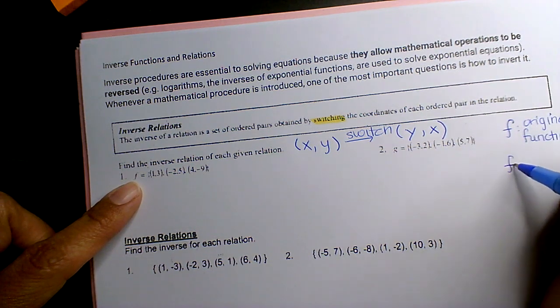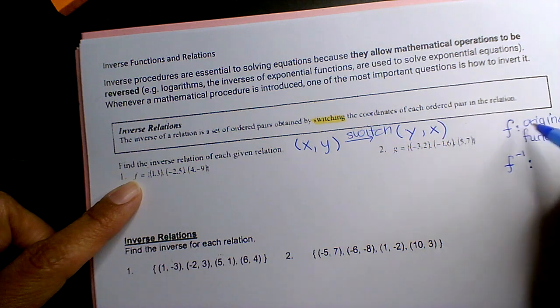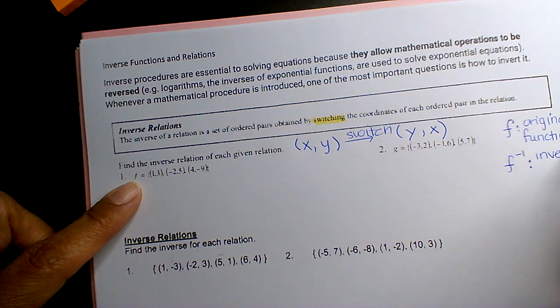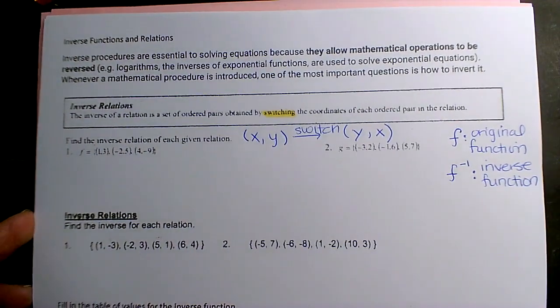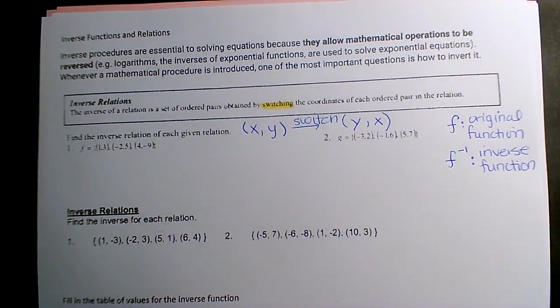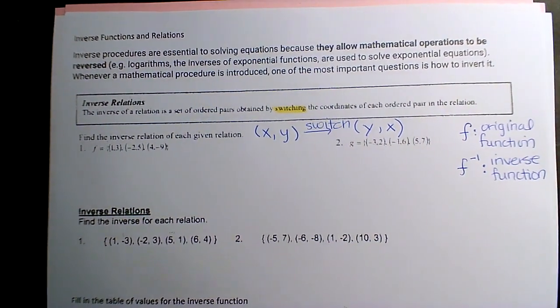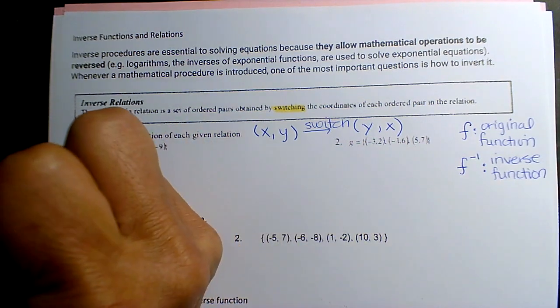If you want to inverse it, you put that little exponent minus one. This is your inverse function, so meaning you did the switch of X,Y. Oh, you can't see, sorry. Inverse function is... because this thing is crooked, so let's fix it.